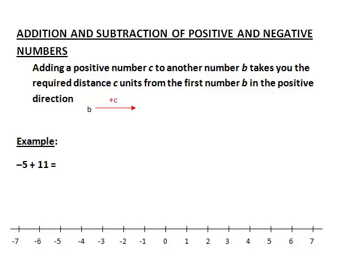Let's look at an example: calculating -5 + 11. We're starting at -5, adding a positive number 11. So we need to move 11 units in the positive direction. If we do that, you could verify counting along here, that actually takes us to positive 6. So -5 + 11 = 6.